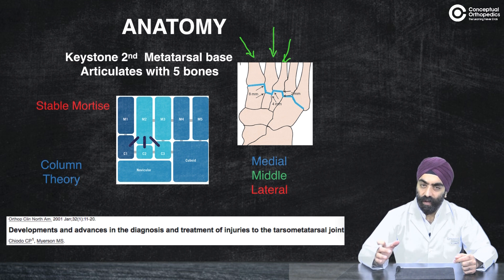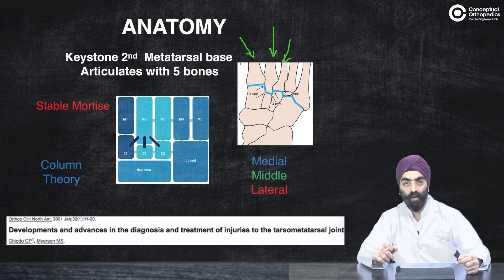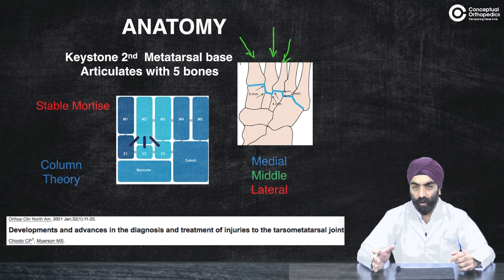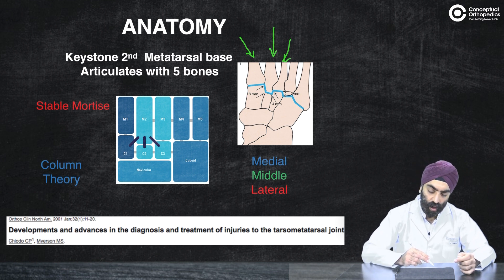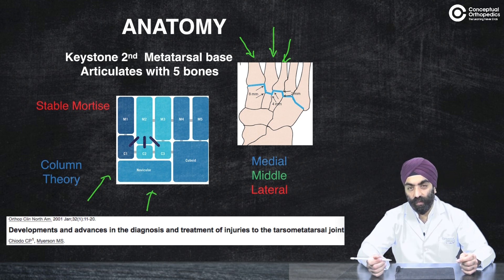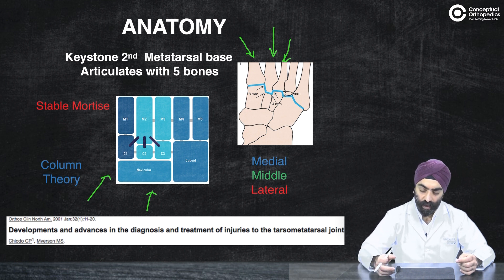That is really the key reason why the second metatarsal base is the main structure injured in a Lisfranc injury, despite being so stable in a bony articulation. We can divide Lisfranc joints into three columns — the column theory. The first column comprises just the first metatarsal and the medial cuneiform. The middle column is the second and third metatarsals and the two cuneiforms. The lateral column is formed by the mobile fourth and fifth metatarsals.